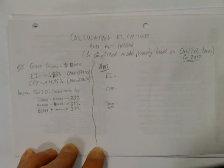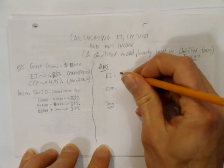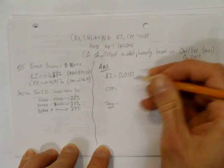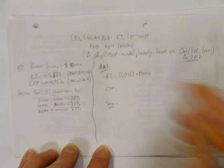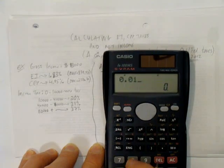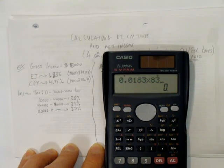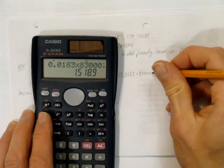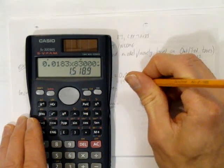So, grabbing my calculator. First thing you need to do is calculate the EI. The EI is 1.83%. We'll convert that to a decimal by dividing by 100 or shifting the decimal over two places. And let's calculate 0.0183 times $83,000. And we get $1,518.90.